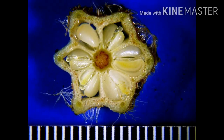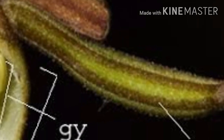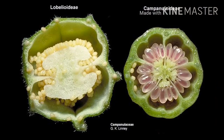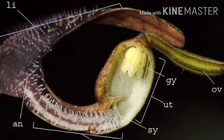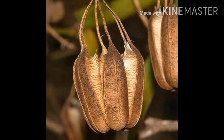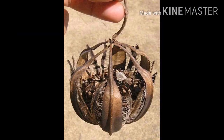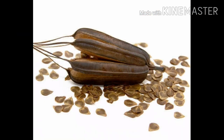The gynostemium consists of four to six carpels, syncarpous, multicarpellary, multilocular, inferior, with many ovules in each locule with axile placentation, style short, stigmas as many as carpels. Fruits are septicidal capsules with basal dehiscence. Seeds are endospermic and small.